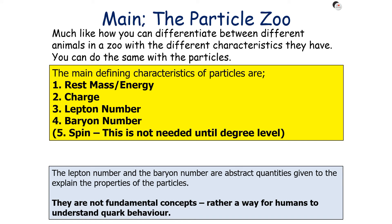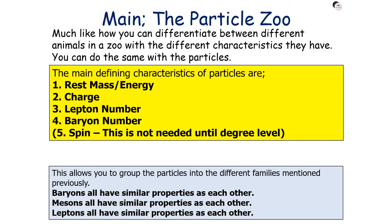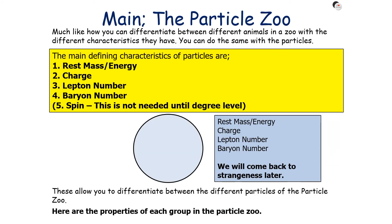Much like how you can differentiate between different animals in a zoo by their characteristics, you can do the same with particles. The main defining characteristics of particles are rest mass energy, charge, lepton number, and baryon number. Lepton number and baryon number are abstract quantities given to explain the properties of particles — not fundamental concepts, but a way for humans to understand quark behaviour. We call these quantum numbers, and they allow you to group particles into the different families.